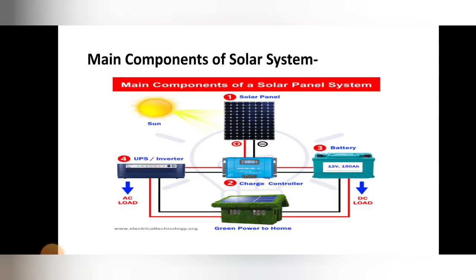We have also seen how the solar panel converts sunlight into electrical energy. As shown in the figure, the four main components are: solar panel, battery, inverter, and solar cells. Those are the main components of the solar system. Today we will stop here and continue with the next point in the next lecture. Thank you, students.